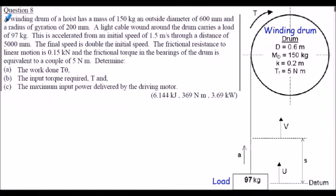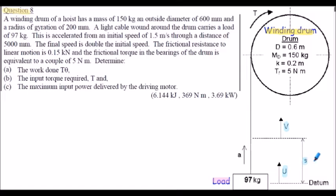On the right-hand side is a diagram of the hoist showing the load being raised, the initial velocity u, the final velocity v, and the vertical distance traveled labeled as s. The datum is at the bottom of the system — that is, at the position when the load has velocity u. This datum will be used as a reference for calculating potential energies.